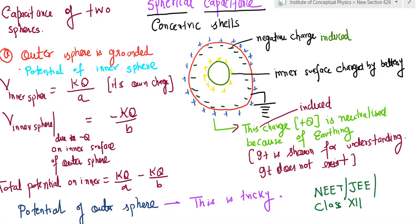The situation is that the outer sphere and the outer surface of the outer sphere is grounded or earthed. So if you see the diagram, there is some induced charge on the outer surface of the outer shell.